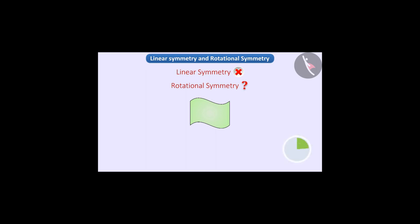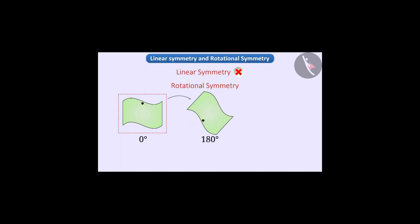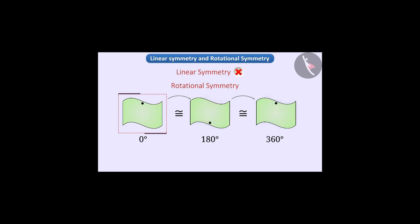Does it have rotational symmetry? A dot will appear on this figure — keep in mind that this point is not part of the shape. We see that at 180 degree rotation and 360 degree rotation, the shape corresponds to the initial shape twice. Therefore, we can say that the figure has rotational symmetry of order 2.